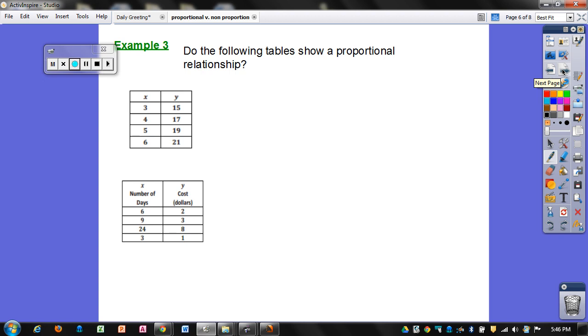Okay, example 3. Do the following tables show a proportional relationship? Well, since I don't see an x value of 0, I'm going to use the constant of proportionality to see if they're proportional. So I'm going to take my y and divide it by the x for each one, and I get 5 for this one. This one is not equal to 5. This one's going to be 4 and 1 fourth. So right there I can already tell that this is not a proportional relationship.